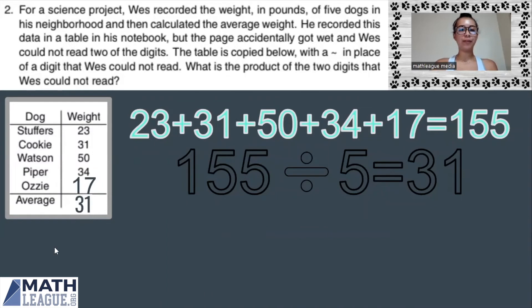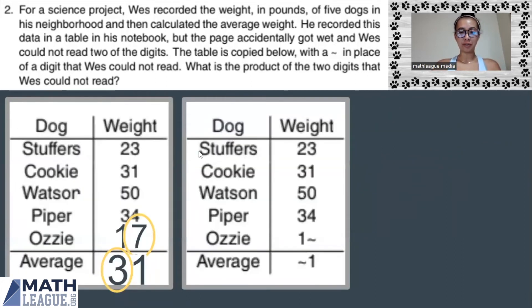Now we filled in all the blanks from our table. We know what all the tildes are, and we have to look back what the problem is asking us. It is telling us to find the product of the two digits that Wes could not read. Comparing our original blank data table and our now perfectly completed data table, we see that we found the units digit of Ozzie's weight, seven, and the tens digit of the average weight of all five dogs, which is three. And we want to find the product of those two digits.